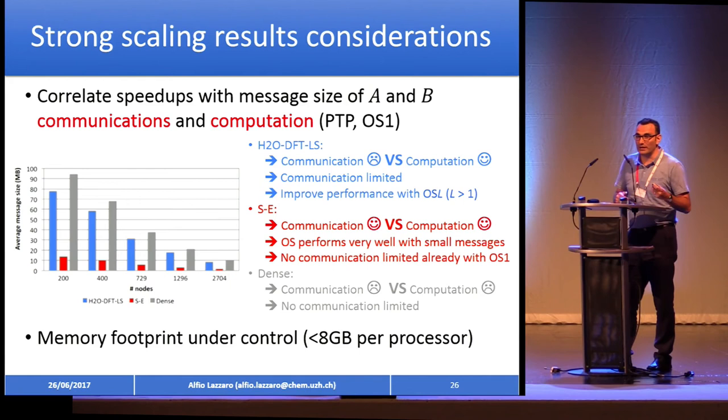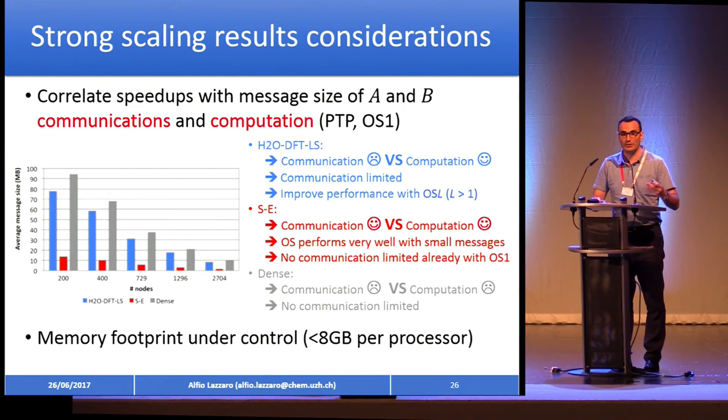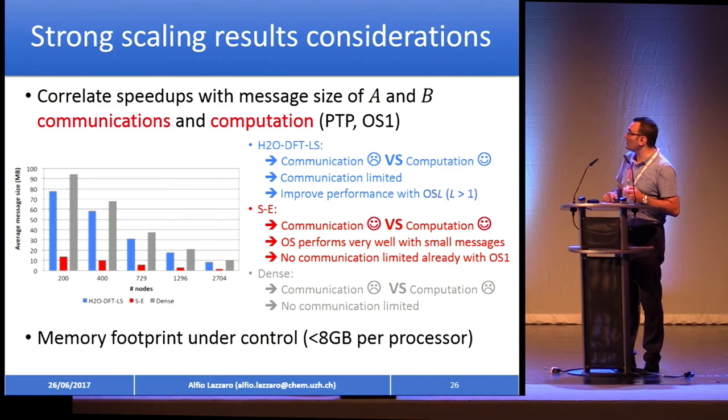The memory footprint: when you use layers, you use more memory — you trade communication for memory. But in these cases, memory usage stays below 8 GB per node on a node with 64 GB, so there was no real problem in this respect.